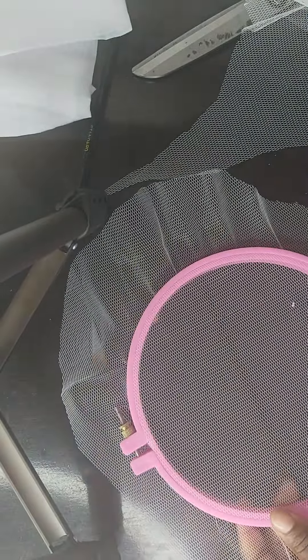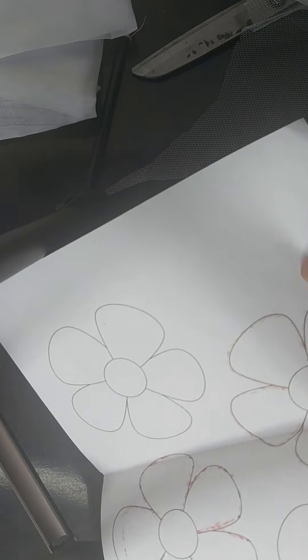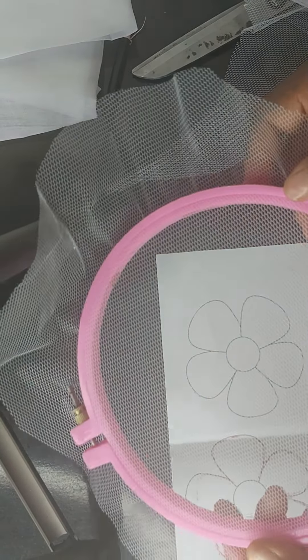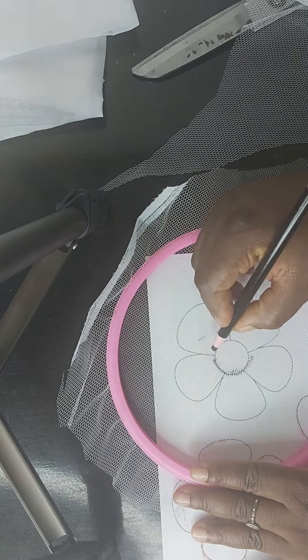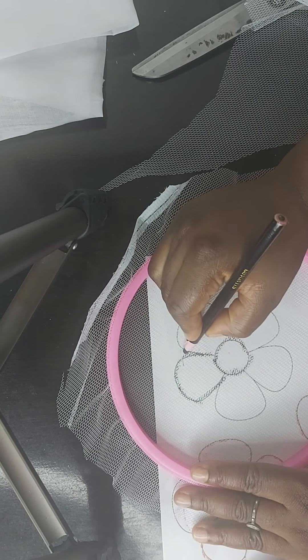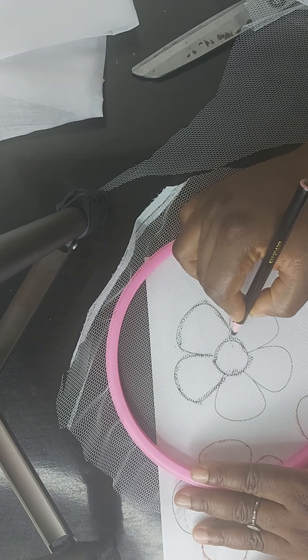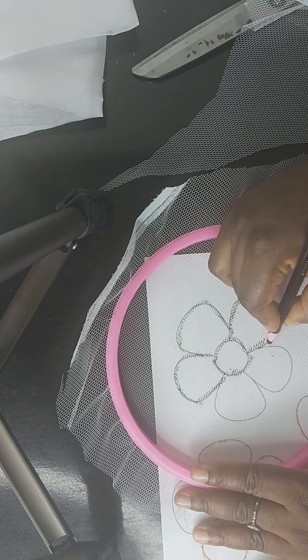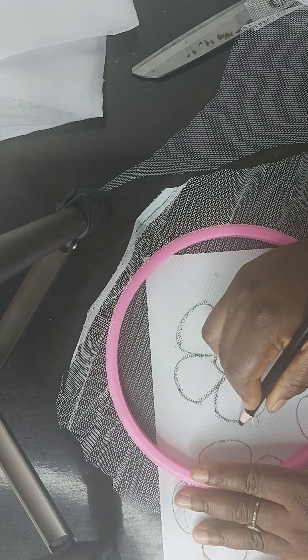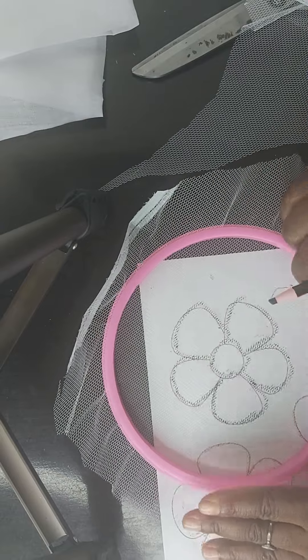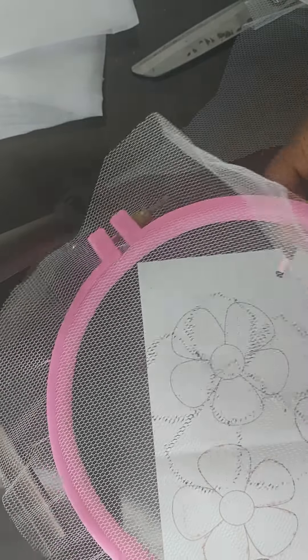This is it. This is our tambour frame. We have mounted it. So now with our first fabric, the first thing we'll do is place our pattern on the ground, our tambour frame flipped upside down, place your fabric on top of it and then trace with your pencil chalk. You can take your time so that you avoid making mistakes. So we are done tracing, can you see?